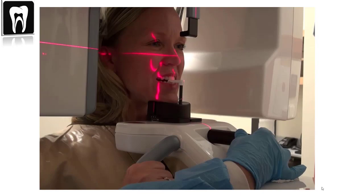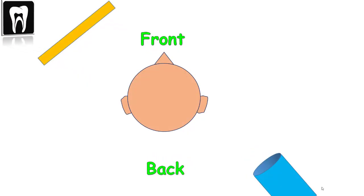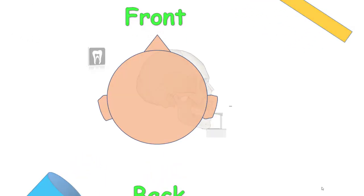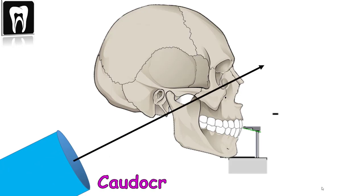In a panoramic machine, the tube and the detector go around the patient, and the x-ray tube or source is in the back. The orientation of the panoramic x-ray beam has a slight caudocranial inclination, meaning the x-ray has a negative angulation directed from down to up.